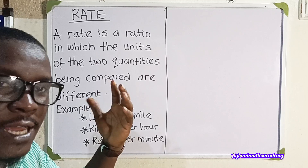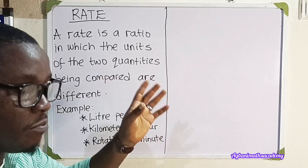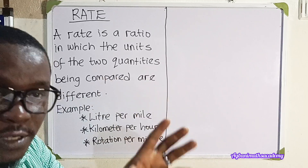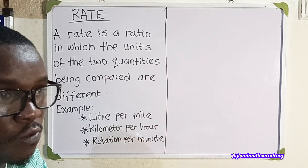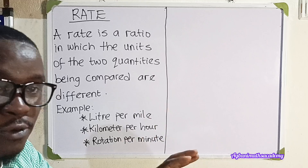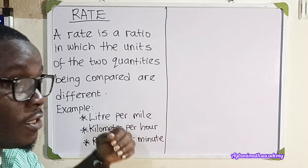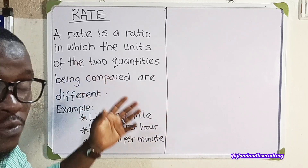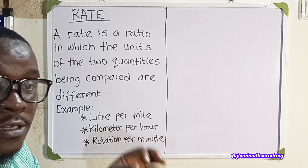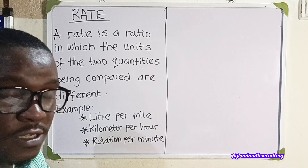When we are looking at ratio, we compared boys to girls, we compared oranges to apples to mangoes, and so on. But in rates, we are comparing quantities with different units.